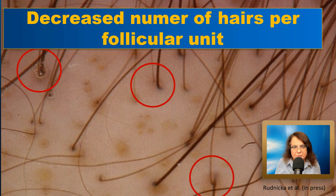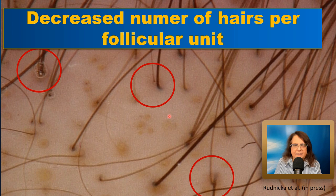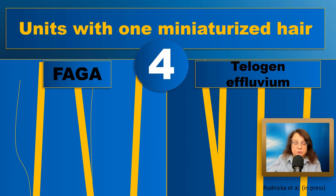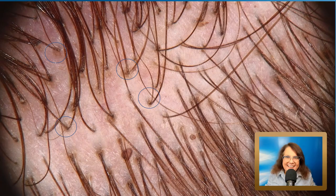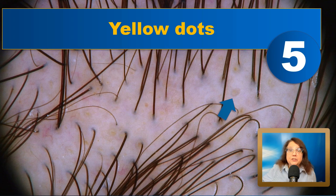I would like to draw your attention to the hair follicles in the follicular units marked red. These follicular units contain one thick and one thin hair — this is something you will not see in other diseases. This is feature number four: follicular units with one thick and one thin hair. You will see it only in androgenetic alopecia, not in telogen effluvium or other hair loss conditions. Here is a trichoscopy image showing one thick and one thin hair in the same follicular unit, marked blue.